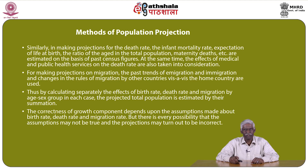By calculating separately the effects of birth rate, death rate, and migration by age and sex groups in each case, the projected total population is estimated by their summation. The correctness of the growth component method depends upon the assumptions made about birth rate, death rate, and migration rate, but there is every possibility that these assumptions may not be true and the projections may turn out to be incorrect.